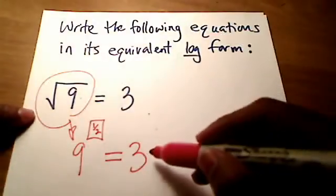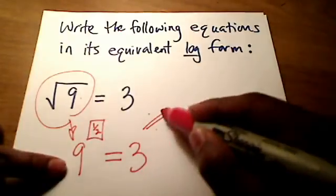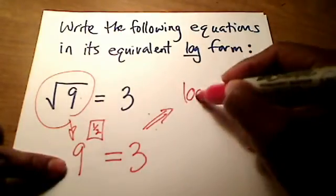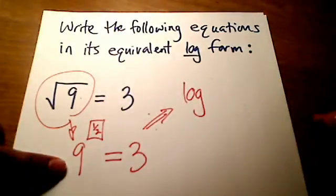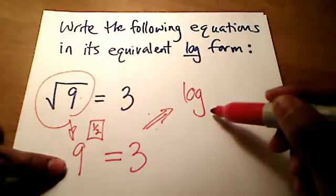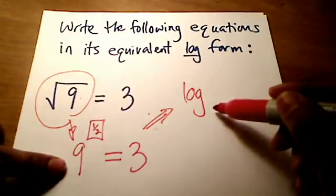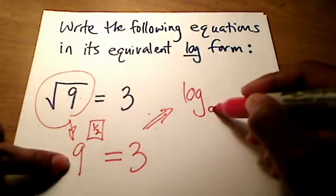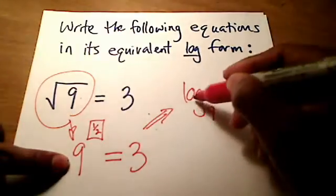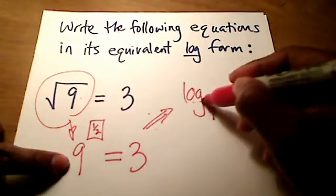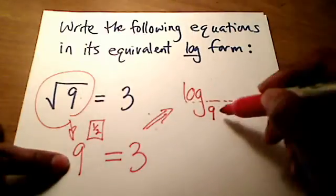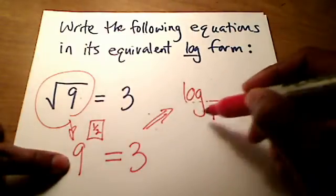So now that this is in exponential form, how do we rewrite this whole thing in logarithmic form? Well, we start with the word log, and then the next thing you're going to write is the base. In this case, the base is 9, so that's going to be written as a subscript. And then back on the same, kind of the main line here is where the word log is.